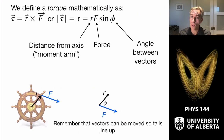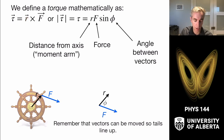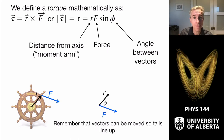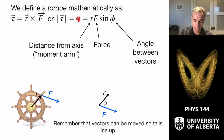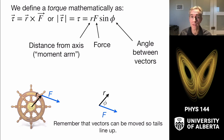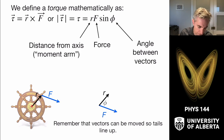We define torque mathematically in vector form: torque is the moment arm as a vector cross product with the force F. So tau = R cross F — order matters. The magnitude of the torque is R times F times the sine of the angle between those two vectors when placed tail to tail. For example, if you consider a pirate ship's steering wheel, the moment arm R comes out and the force is spinning the wheel. To calculate the angle, slide the force vector so it is tail to tail with the moment arm — that gives you the angle.